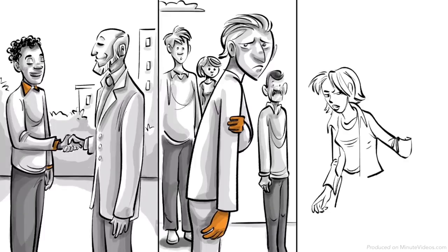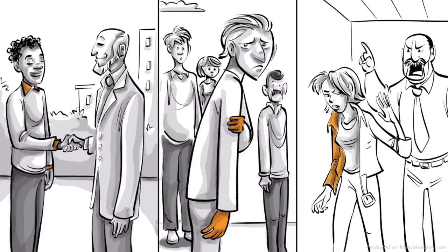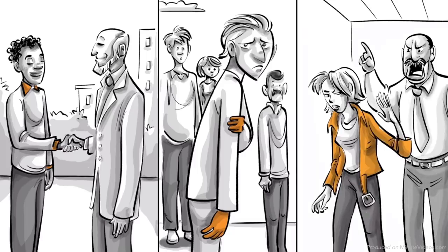Ida develops an anal expulsive personality. She becomes messy, disorganized, inconsiderate of other people's feelings and rebellious against authority.